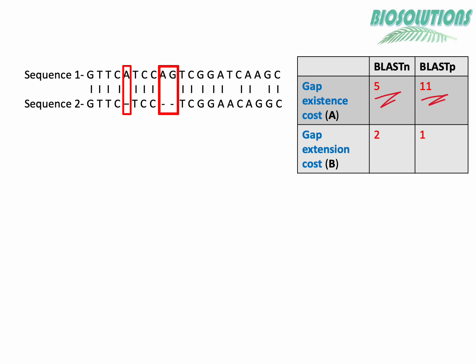Note that the value of gap extension is less than the value of gap existence. Why? Because a single mutational event may cause the insertion or deletion of more than one base or residue, the length of the gap. Hence the mere presence of the gap is penalized heavily, whereas a lesser gap extension penalty value is assigned to each subsequent base or residue in the gap.